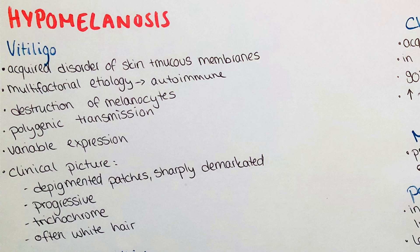One exemplary disease leading to hypomelanosis of the skin is vitiligo. It is an acquired disorder of the skin and mucous membranes presenting with local or disseminated hypopigmentation of the skin. It is thought to be of autoimmunological polygenic origin, and mechanical irritation triggers the skin reaction, leading to depigmentation which is irregular, asymmetric and sharply demarcated. The irritation of the skin leads to destruction of melanocytes and so eventually to discoloration of the skin.